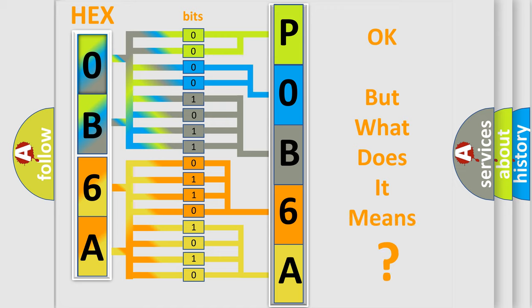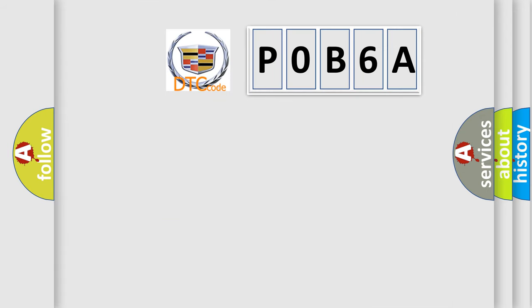The number itself does not make sense to us if we cannot assign information about what it actually expresses. So, what does the diagnostic trouble code P0B6A interpret specifically for Cadillac?